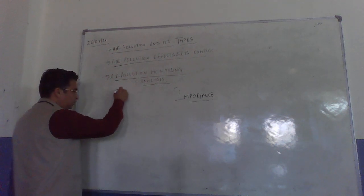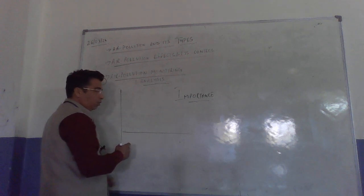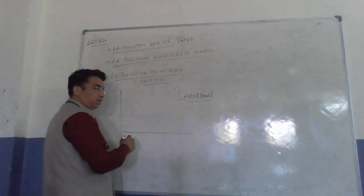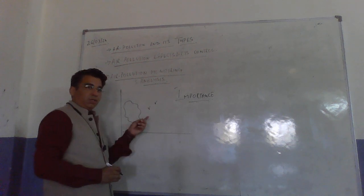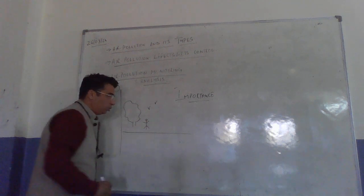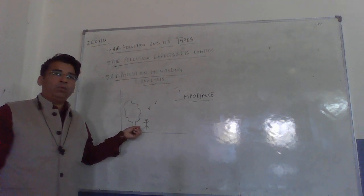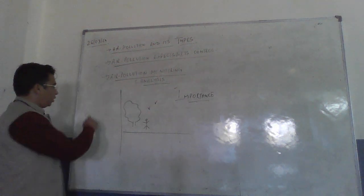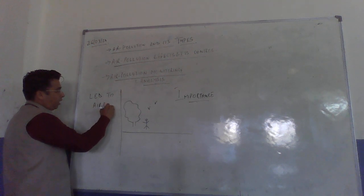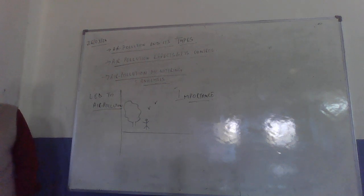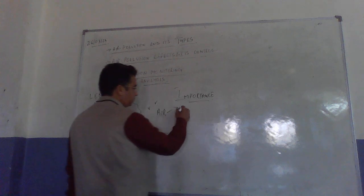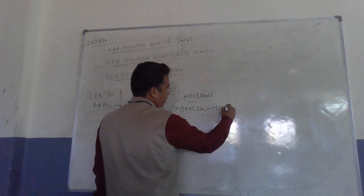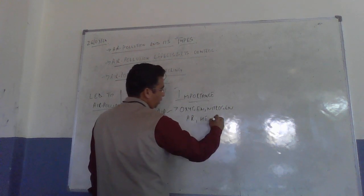Air pollution basically consists of polluting the environment. The environment has plantation, trees, the ecosystem, and human species. Air is basically a composition of a number of gases — we have oxygen, we have nitrogen, we have argon, we have helium, we have hydrogen.